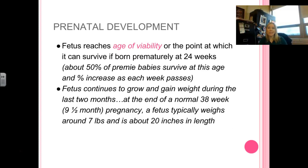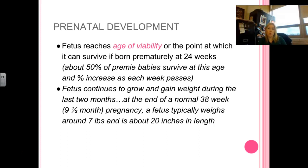Once the fetus has hit 24 weeks, it is considered to be the age of viability. That's called the age of viability because about 50% of premature babies survive at that age, and as each week passes, that percentage goes up. It is more likely for multiples — twins, triplets, quadruplets — to be born premature. So you are really hoping to get that fetal development to that 24-week point, because there is a 50% chance the baby will have the capacity to survive outside the mother.